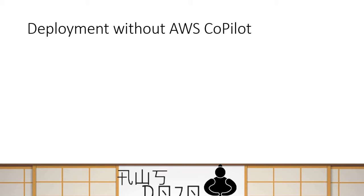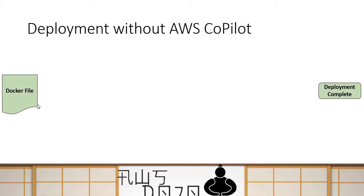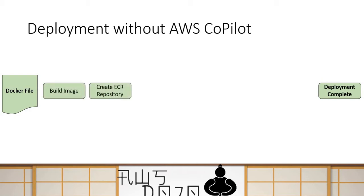Let's try to see how deployment looks without AWS Copilot. Suppose you have an application for which you have created a Dockerfile, and you want to deploy this application. What you will do — either using automation or manually — you will first build the image, then create an ECR repository, a container repository in AWS, then upload the image to the repository, then create a cluster.